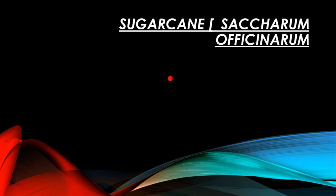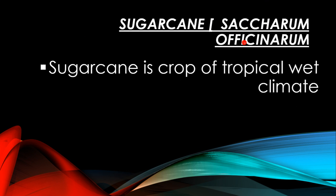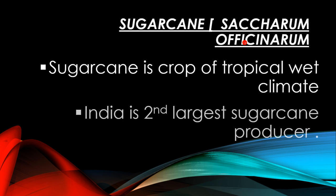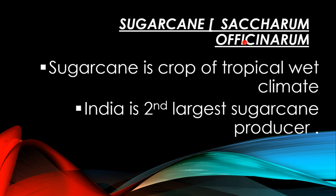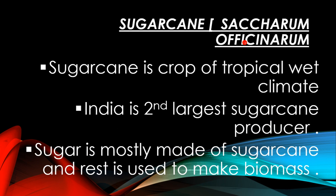Now we will talk about sugar cane. The scientific name of sugar cane is Saccharum officinarum. Sugar cane is a crop of tropical wet climate. India is the second largest sugar cane producer. Sugar is mostly made from sugar cane, and the remaining material is used to make biomass.